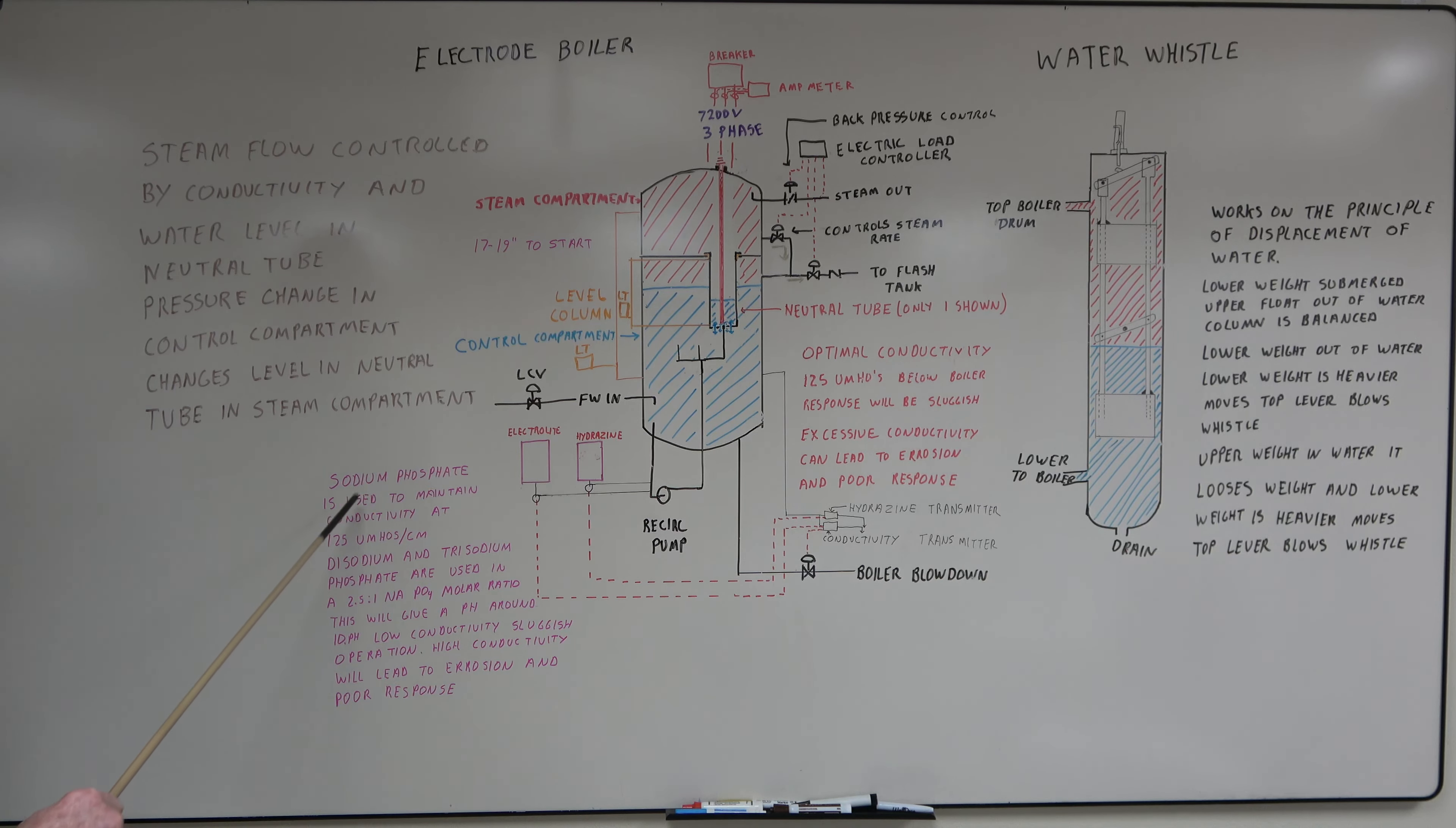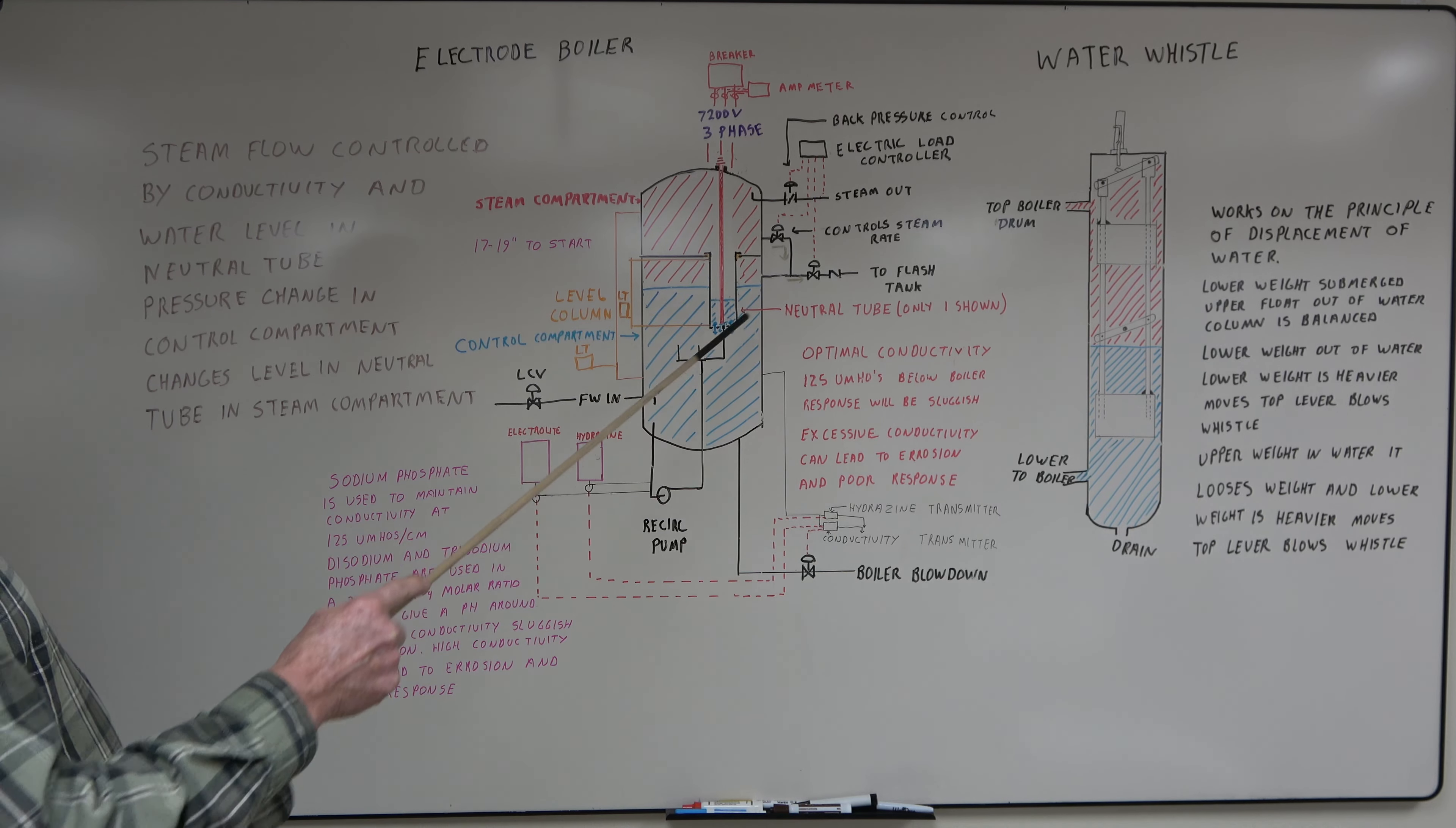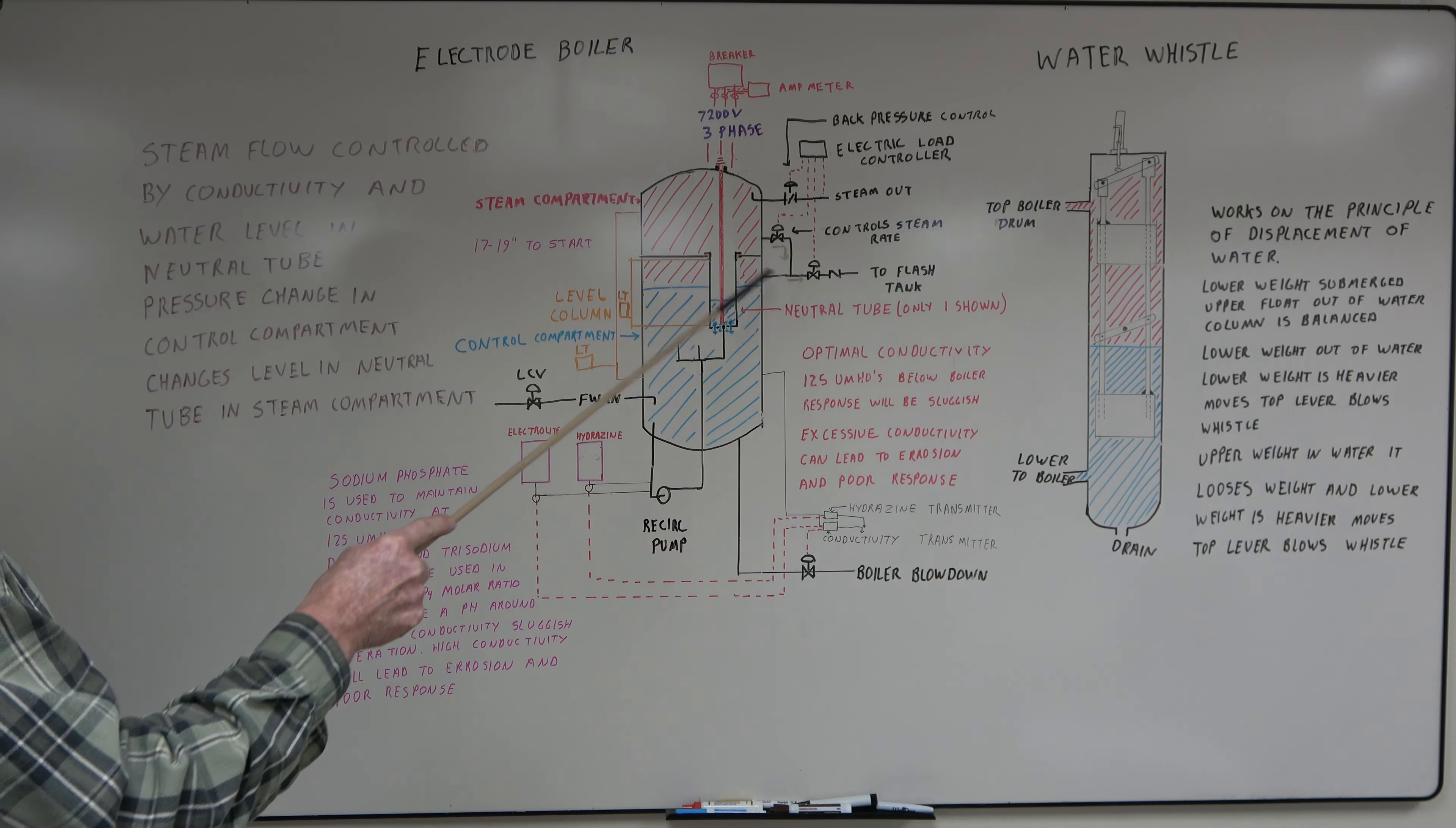What's used for electrolyte? Sodium phosphate. It's used to maintain a conductivity at 125 micromhos per centimeter. These disodium and trisodium phosphate, they're used in a 2.5 to 1 sodium to phosphate molar ratio. This should give a pH around 10. Like I say, the pH, the conductivity is just huge for the operation and having all these control valves working correctly.